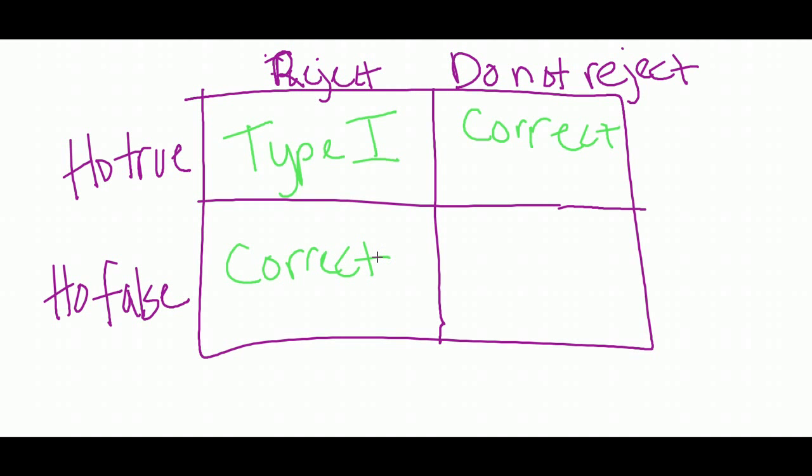And then let's say you have a null that is false, and you do not reject it. So there is an effect there, but you just can't seem to find it. That would be a type 2 error.